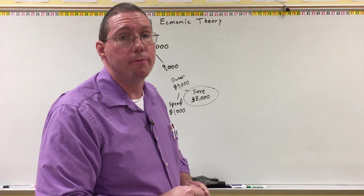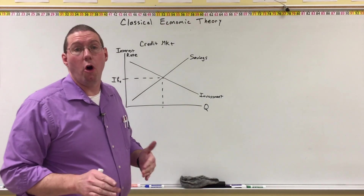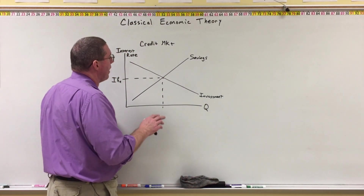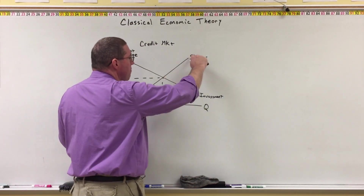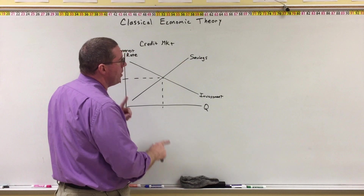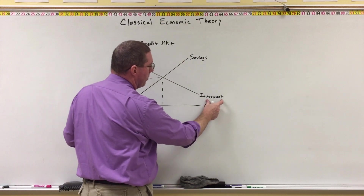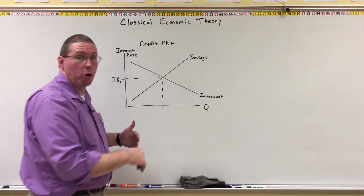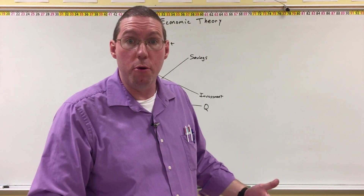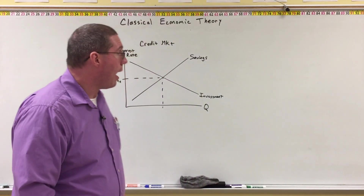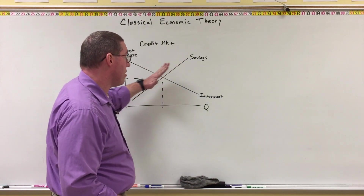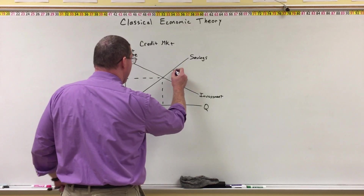And that's what we're going to look at right now. I want to remind you about the lesson on money and the credit market. What we learned was this: when people save money, that savings is then loaned out to borrowers. And we have named borrowers investment, because what borrowers do when they borrow money is they spend the money on things that are produced. So when that owner saves $8,000, that's going to be an increase in savings in the credit market.